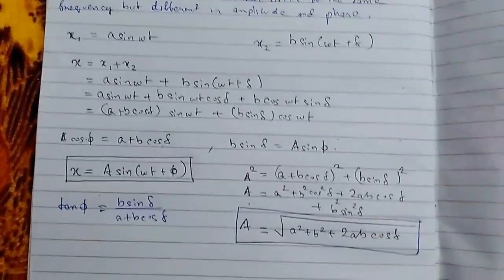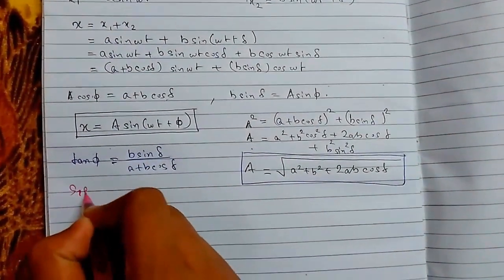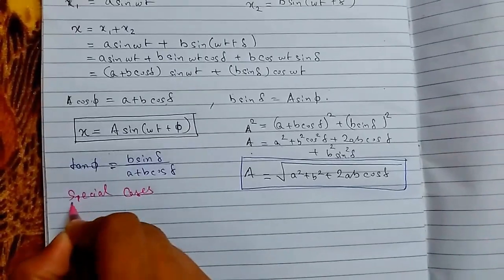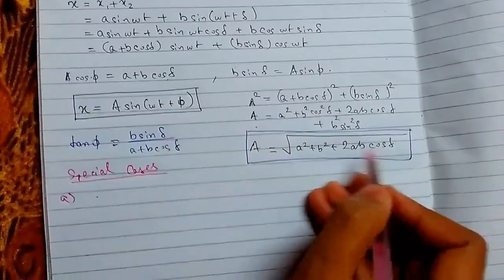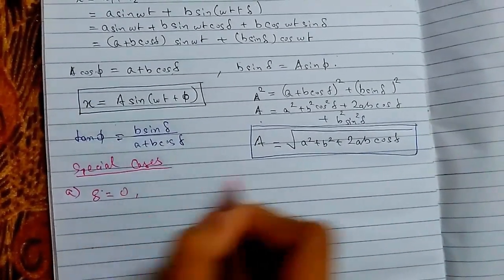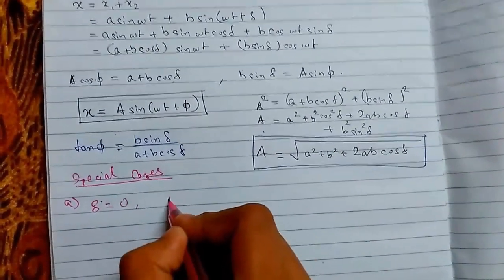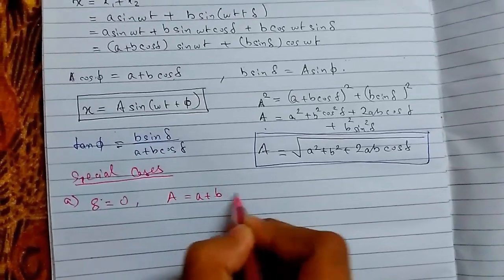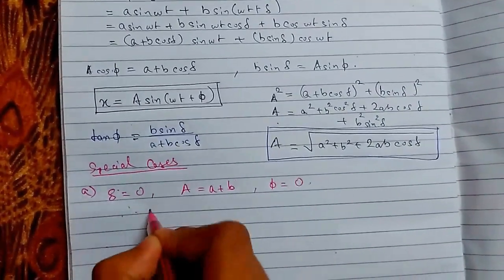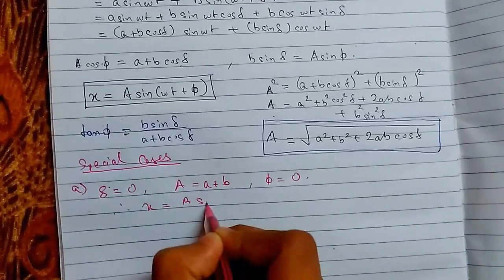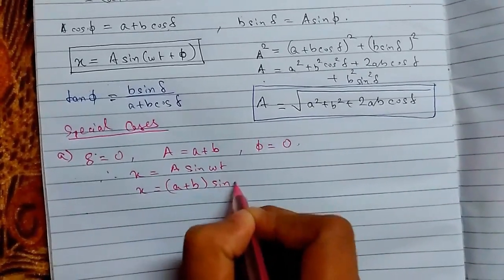Now we will see some special cases. Special case one: when δ equals 0, cos(0) is 1 and this turns out to be (a + b)². So A equals (a + b) and φ equals 0. Therefore, x equals (a + b) sin(ωt).